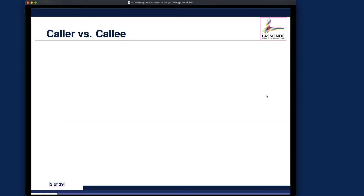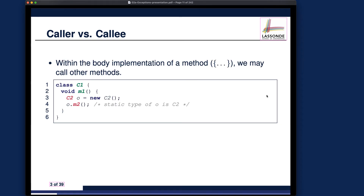I would like to start with the first topic: caller versus colleague. The easiest way to learn about this is by using an example. Within the body of a method — what's really within the curly brackets — we may call other methods. In the debugger, you can either step over the method call or step into it, as we learned in the review tutorial series. I'll switch to iPad in a moment, but we want to define the idea about caller and colleague.